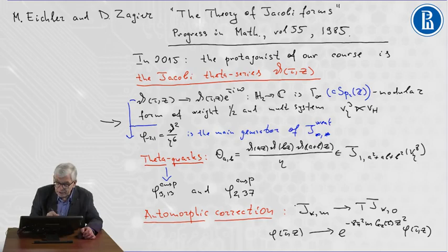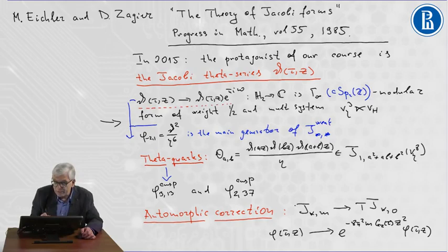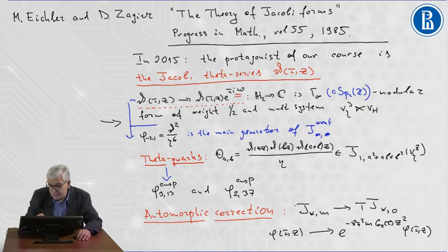We can analyze Jacobi Theta series as a function on the Siegel upper half plane. It means we add the third variable omega in the definition of Jacobi form.